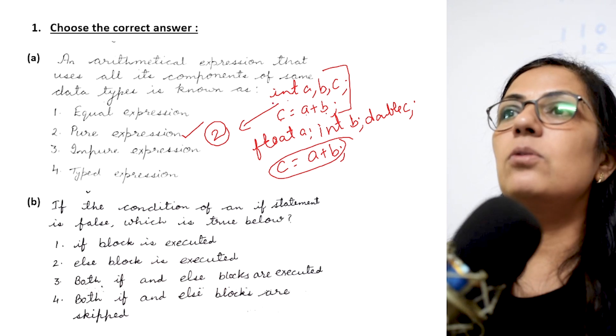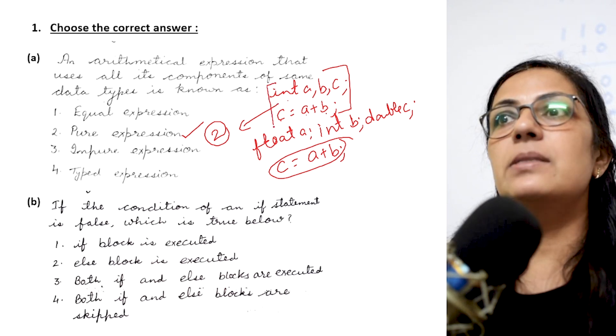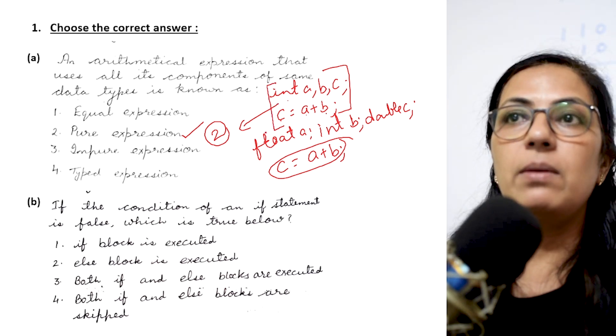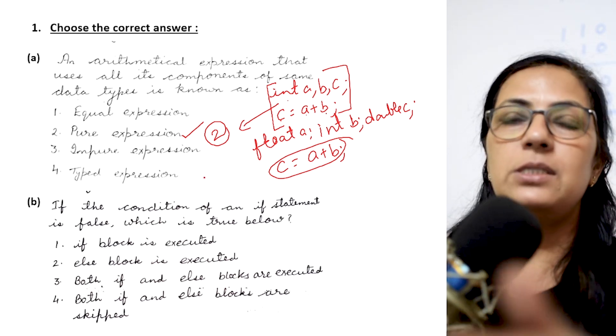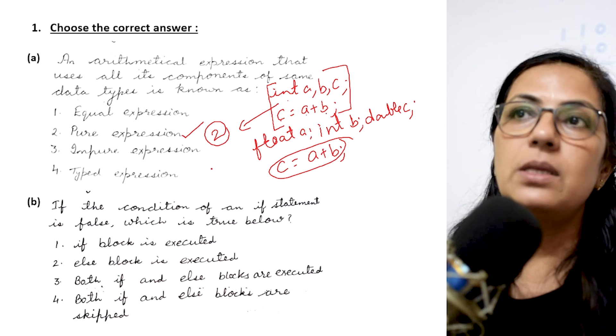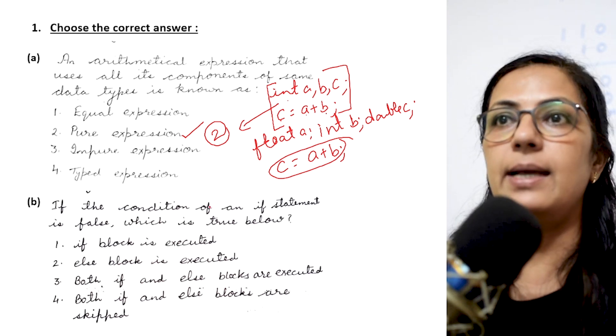But if I write float a semicolon, int b semicolon, double c, then if you write c equals to a plus b, the variables are used of different data types. So this is not pure expression, this is impure expression. I hope the meaning of pure expression is clear to you. In the exams you can be asked to write the type of expression. You will be checking the data types used and accordingly you will write the answer.